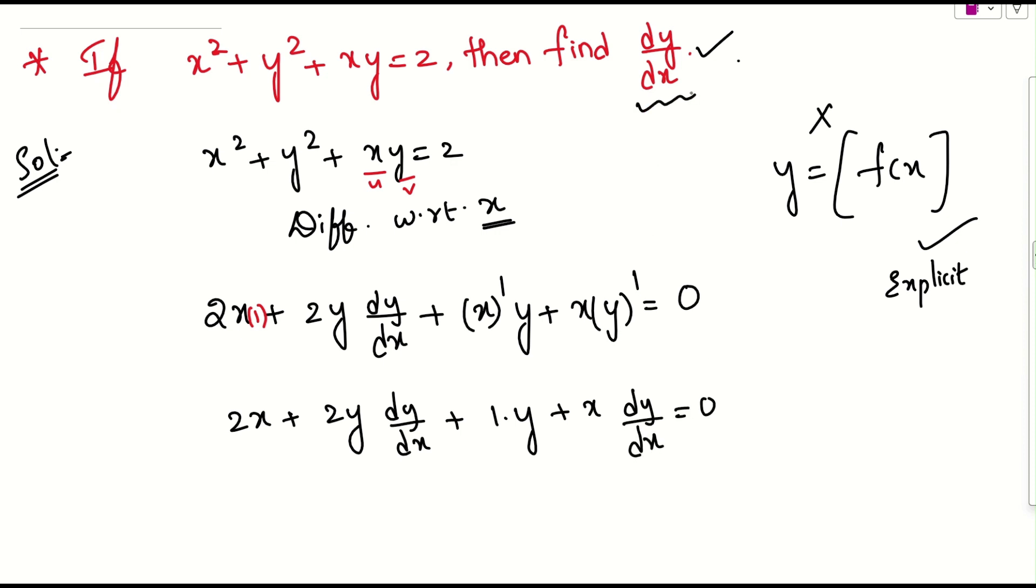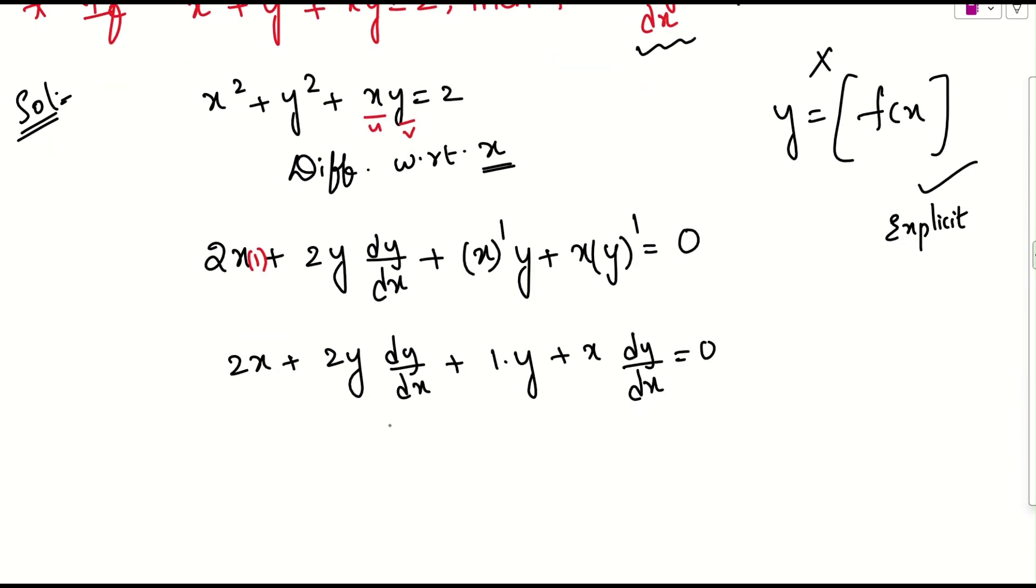What is our main ultimate goal to find? dy by dx. So, let us take dy by dx terms to one side, rest of the things to the other side. 2y into dy by dx and the last term, that is x into dy by dx. If you send rest of the things, which is minus 2x, which is minus y to the other side.